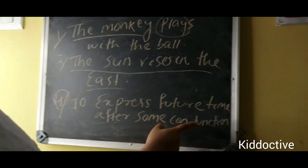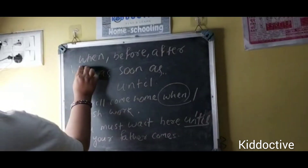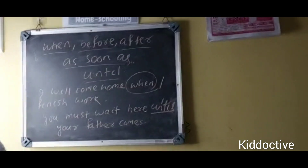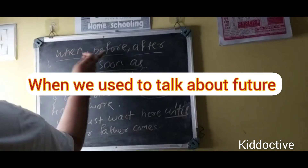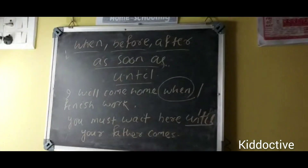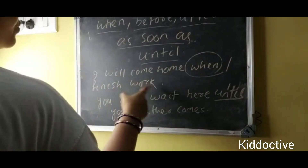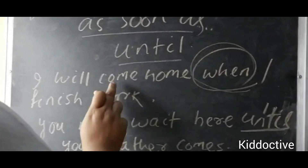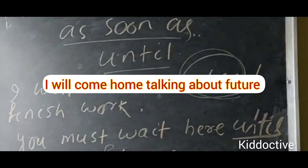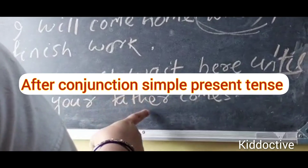The fourth rule is to express future time after certain conjunctions: when, before, after, as soon as, and until. If your sentence uses these conjunctions, we also use simple present. For example: 'I will come home when I finish work.' Also: 'You must wait here until your father comes.' Here two sentences are connected with a conjunction.